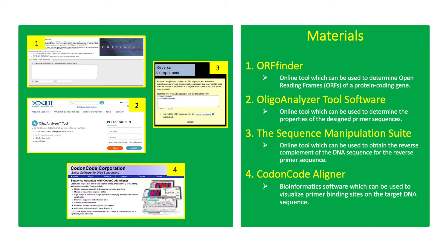The materials for this activity are online open-source bioinformatics platforms. ORF Finder is used to determine open reading frames or ORFs of a protein-coding gene. OligoAnalyzer tool software is used to determine the properties of the designed primer sequences. The Sequence Manipulation Suite is an online tool used to obtain the reverse complement of the DNA sequence for the reverse primer. Codon-Code Aligner can be used to visualize the primer binding sites on the target DNA sequence.